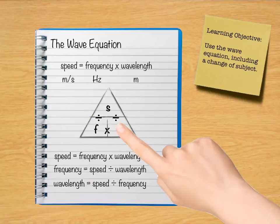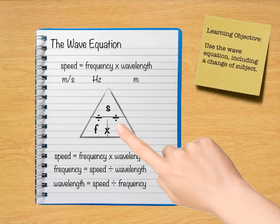Lastly, if I cover over the wavelength symbol then I can make it the subject of the equation, and you can see that that is speed divided by frequency. When doing all these equations it's important not to forget the units: speed is in meters per second, frequency is in hertz, and wavelength is in meters. Good luck!